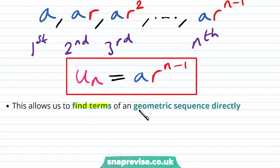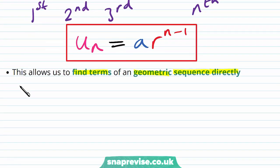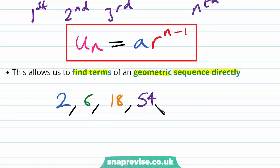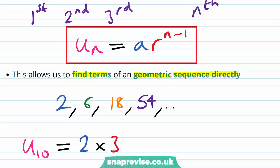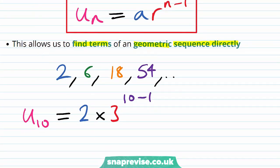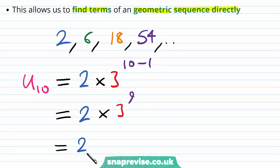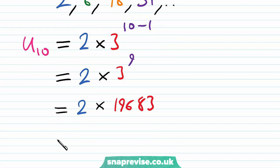This allows us to find the terms of a geometric sequence directly. Let's look at this same geometric sequence: 2, 6, 18, 54. As earlier, we wanted to find the tenth term, so let's examine u₁₀. Using our formula, this is going to be equal to the first term 2, multiplied by the common ratio 3, to the power of 10 minus 1. Therefore this is 2 multiplied by 3 to the power of 9. Three to the power of 9 is equal to 19,683. So therefore, as we had before, we have 39,366 as our tenth term.